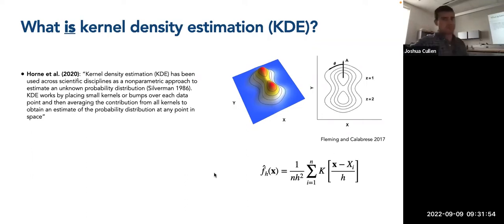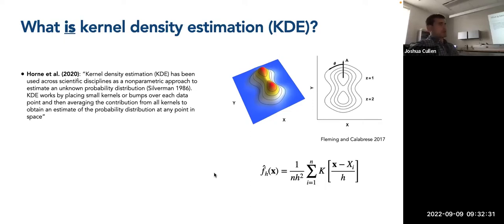So what is kernel density estimation? According to Horne et al. 2020, kernel density estimation has been used across scientific disciplines as a nonparametric approach to estimate an unknown probability distribution. This is particularly useful because a lot of these spatial patterns of animal movements are considered nonparametric. KDE works by placing small kernels or bumps over each data point and then averaging the contribution from all kernels to obtain an estimate of the probability distribution at any point in space, coming up with surfaces of spatial intensity estimated by a kernel density function.